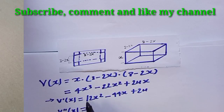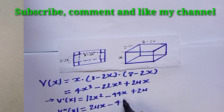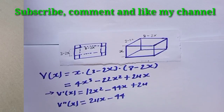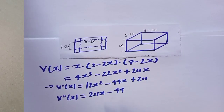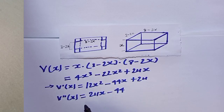To find the points of maxima and minima, you differentiate a second time. When you differentiate the second time, you get V''(x) = 24x minus 44.